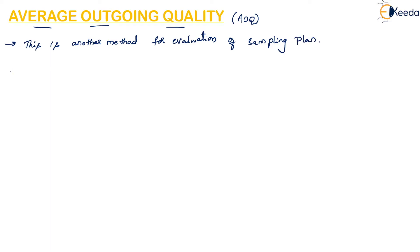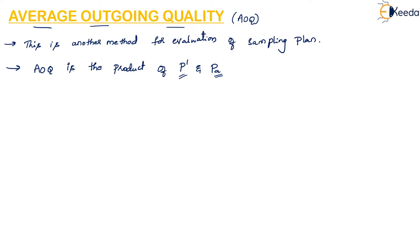AOQ or Average Outgoing Quality is simply the product of P' and PA, where PA is the probability of acceptance and P' is the percent defective. So, AOQ is nothing but the product of P' into PA.